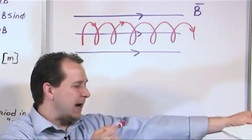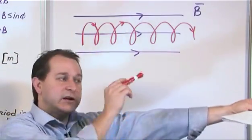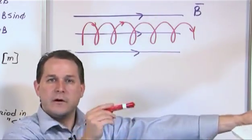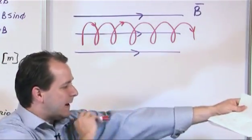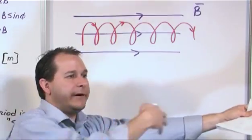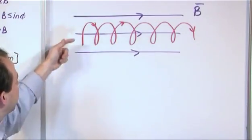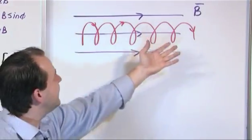Some of the velocity is perpendicular. That's going to lead to an orbiting motion. Some of the velocity is parallel. That's just going to be allowing the particle to move that direction. So what you're going to get in the end result is a spiral. You're going to get like a helix.